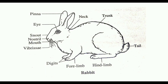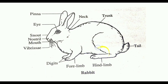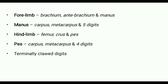The trunk region of rabbit contains paired and pentadactyl forelimbs and hind limbs. Pentadactyl means having five toes or fingers. The forelimb has three divisions: brachium, anti-brachium, and manus — also called upper arm, forearm, and hand respectively.